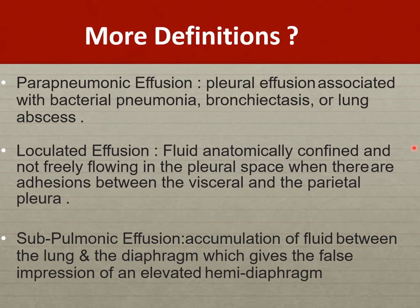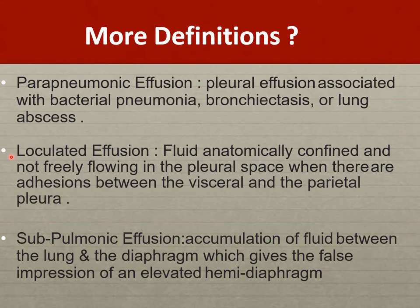There are types of pleural effusion we will go through in detail. Para-pneumonic effusion is pleural effusion associated with bacterial pneumonia, bronchiectasis, or lung abscesses. Loculated effusion is where a confined area is filled with effusion, causing a pocket of fluid within the lung cavity. Sub-pulmonic effusion is the accumulation of fluid between the lung and the diaphragm, which gives a false impression of an elevated hemidiaphragm.